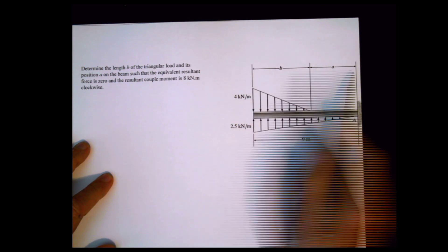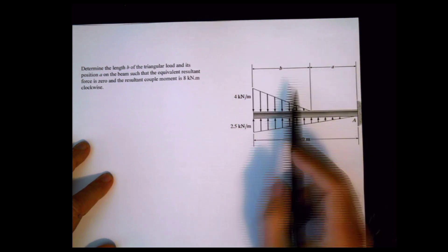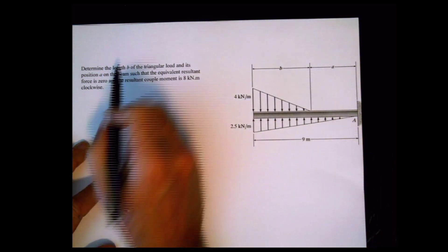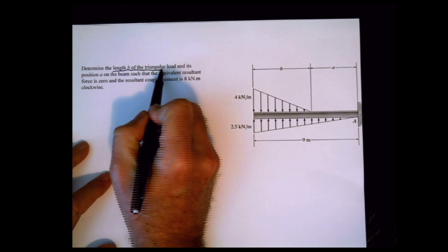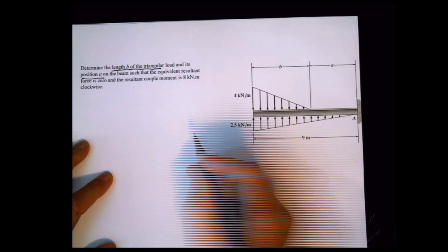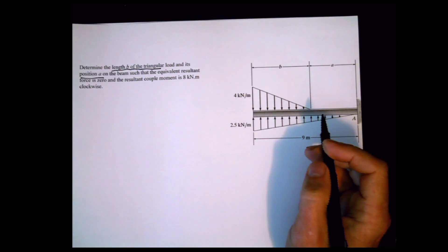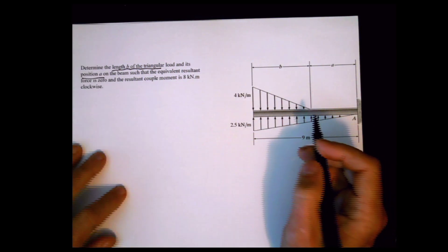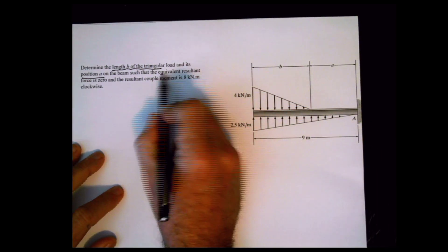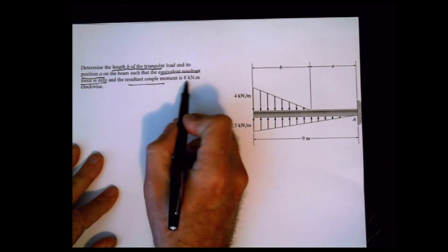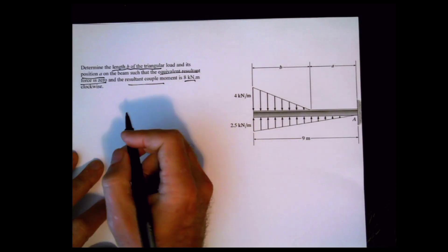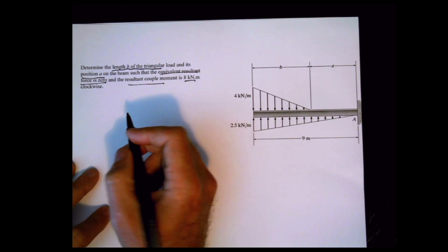In this case, we don't have distances a and b. Basically what the problem is asking is: find the length of the triangular load and its position — a and b. Then we have some constraints: the equivalent resultant force is zero, and the resultant moment is eight.